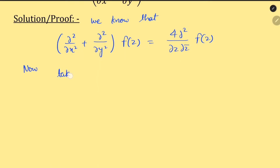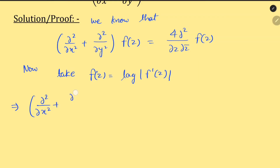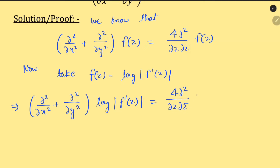Take F(z) = log|f'(z)|. Value put करते हैं (substituting the value), this implies that ∂²/∂x² + ∂²/∂y² of log|f'(z)| is equal to 4·∂²/∂z∂z̄ of log|f'(z)|.